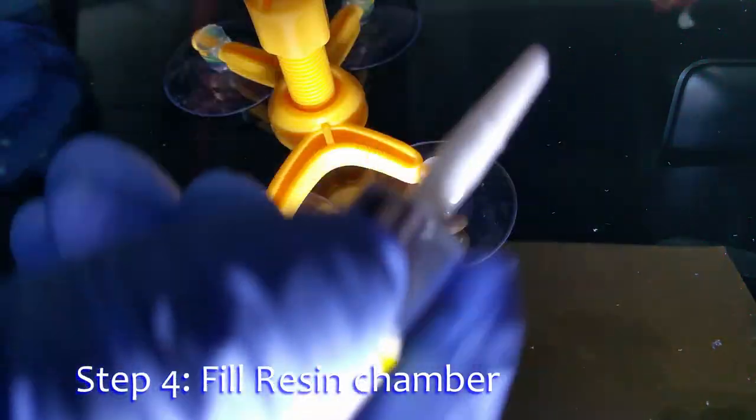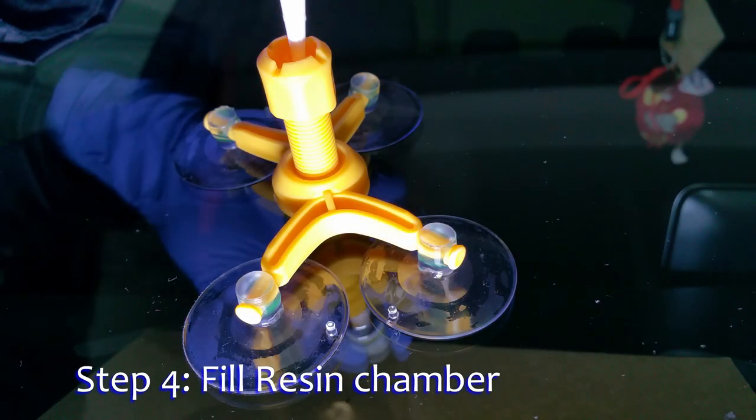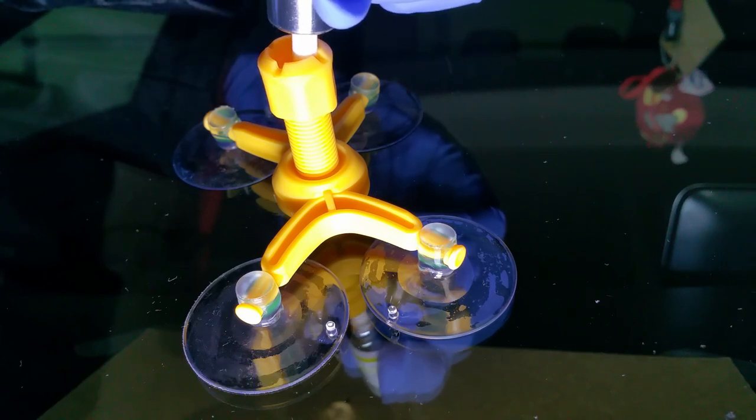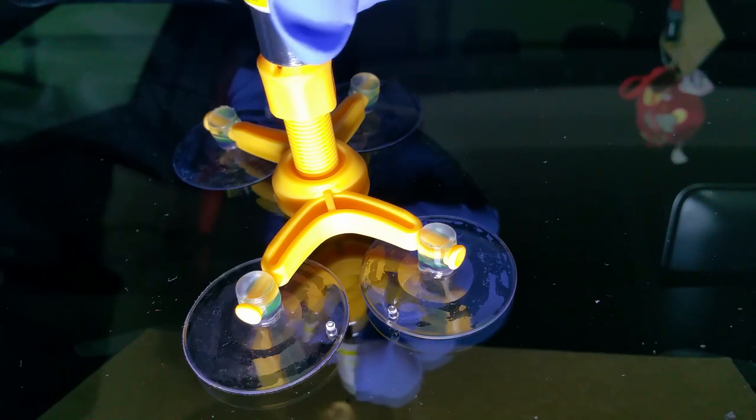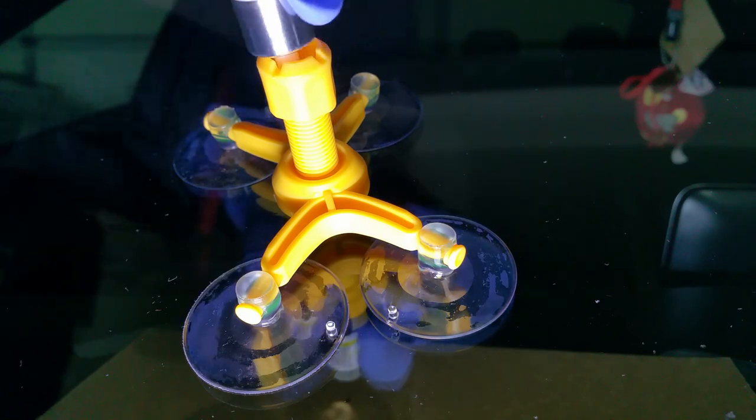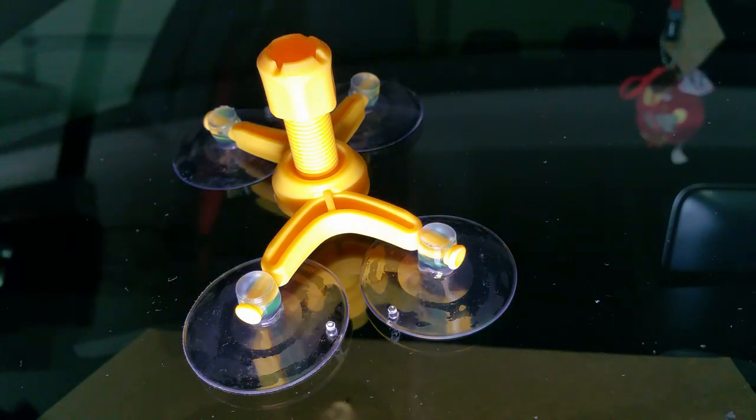Squeeze three to six drops of the resin into the chamber. The size of the damage would dictate how much is needed. If resin leaks out at this point, then the chamber is not tightened up on the windshield, so turn to further tighten the seal and stop the leak.